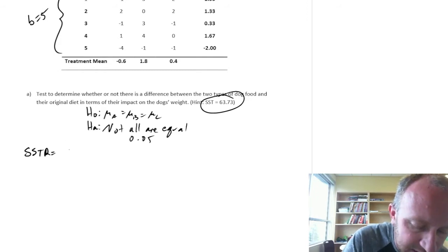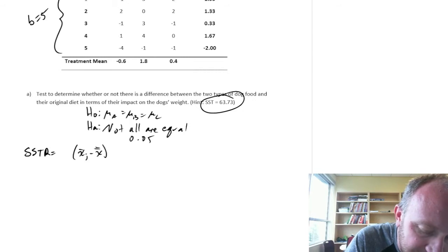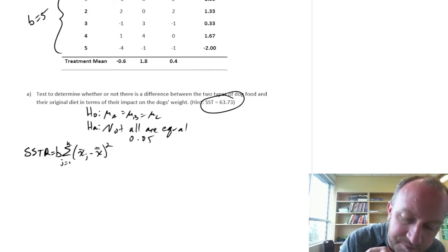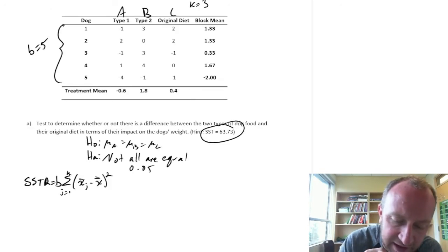So to start SSTR. So our formula here. We're looking at differences between treatment means and the grand mean, which we still don't have. We add all of those up across our treatments. And we multiply it by the number of observations in each of those treatments.